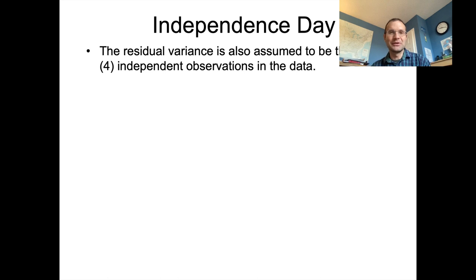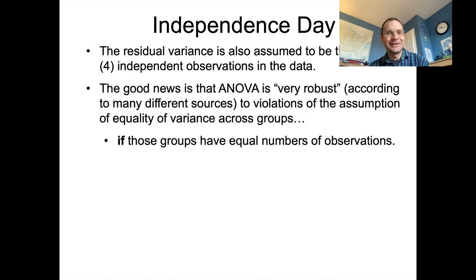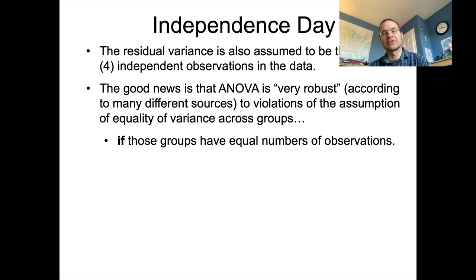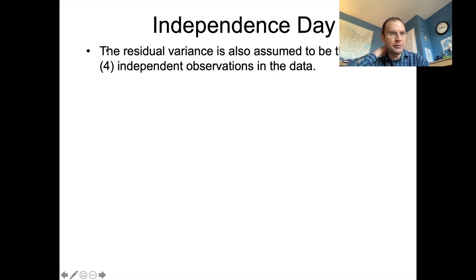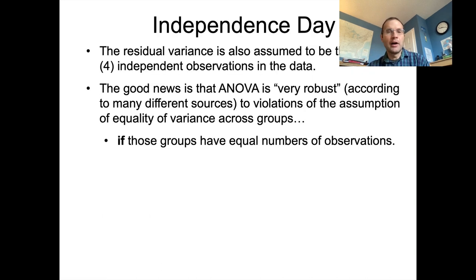That residual variance has to be unpredictable — the unpredictable component of the overall variance. So the first assumption is that it has to be random. The second is that it's normally distributed. Third, it has to be equal, or at least not significantly different, among the groups you're testing. There's also a fourth assumption: that the residual variance is the result of independent observations. The good news is that ANOVA is very robust to violations of the equality of variance assumption if those groups have equal numbers of observations.